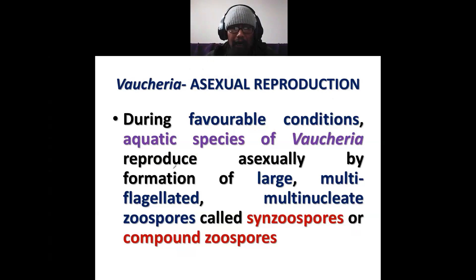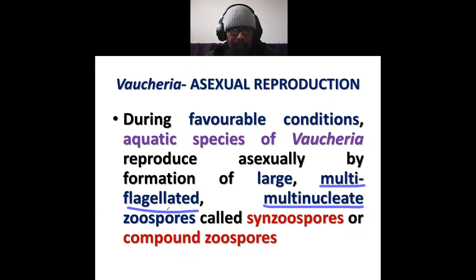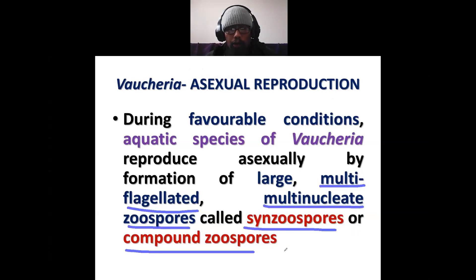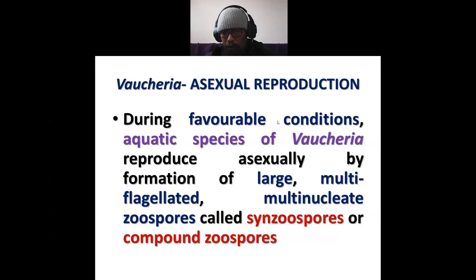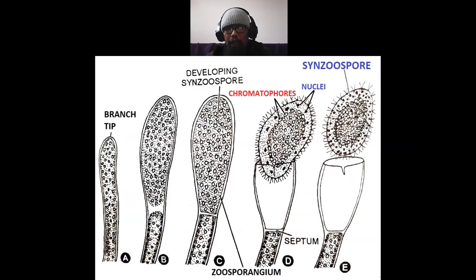Aquatic species of Vaucheria reproduce asexually by formation of large, multi-nucleate, multi-flagellated and compound zoospores. This diagram you have to draw on your own.